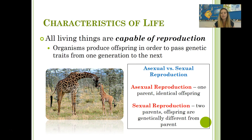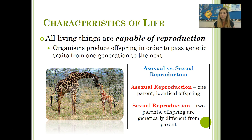The next characteristic of life is that all living things are capable of reproduction. Organisms produce offspring in order to pass genetic traits from one generation to the next for the survival of the species. Organisms are capable of reproduction in different ways: asexual reproduction and sexual reproduction. Asexual reproduction is when one parent produces offspring, so the offspring are genetically identical to the parent — a bacteria cell that simply divides is an example. Then you have sexual reproduction, where two parents combine traits to produce offspring that are genetically different from the parents. Pause here if you need to fill out the Venn diagram under 8C.